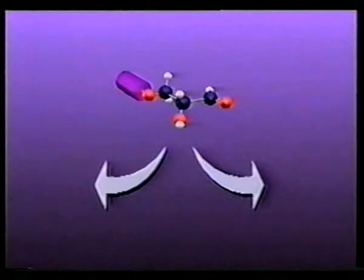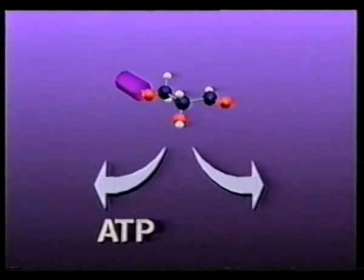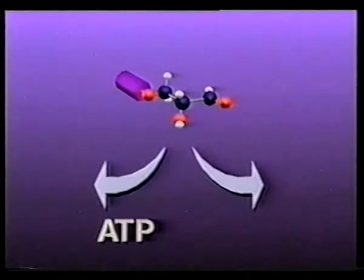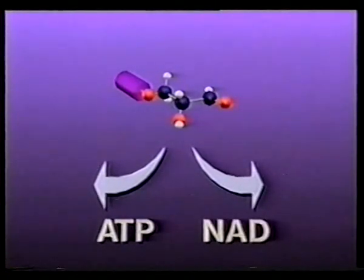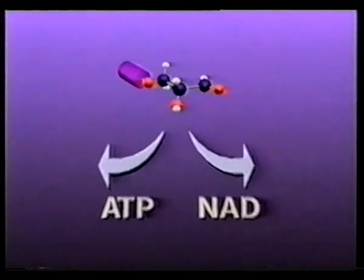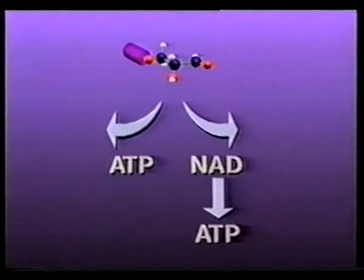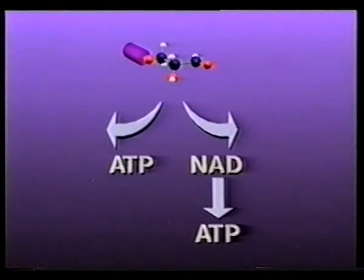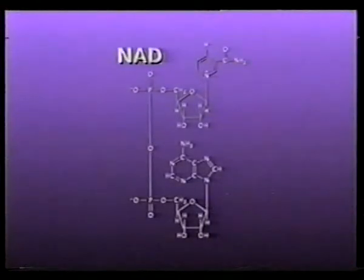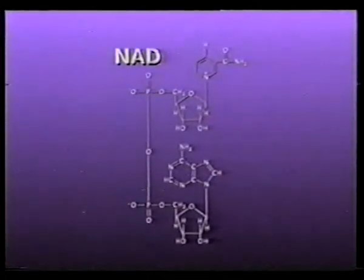We'll watch PGAL synthesize ATP and energize a molecule of nicotinamide-adenine dinucleotide, or NAD. NAD is one of a group of intermediate energy carriers which is used to generate ATP. Its complex structure is devoted to the transfer of energy.